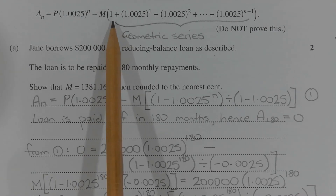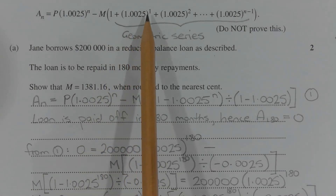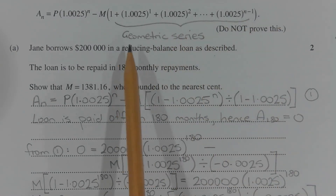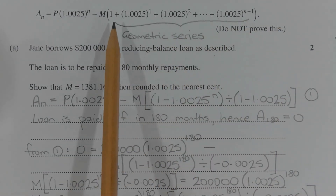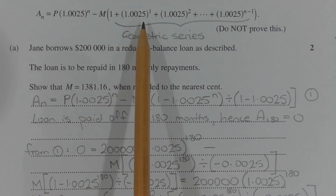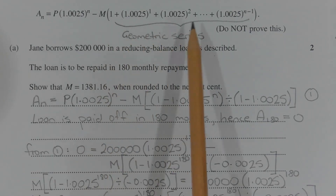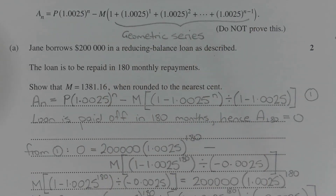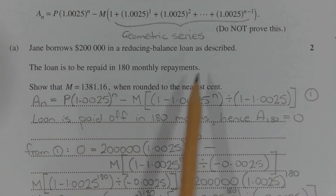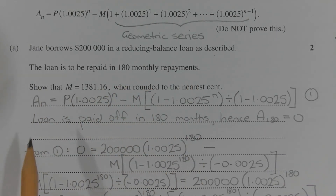The sum of the terms 1 plus 1.0025 to the power of 1 plus 1.0025 to the power of 2 and so on forms a geometric series, with the first term A equals 1, the common ratio R equal to 1.0025, and there are 180 terms. So N is equal to 180 because the loan is repaid in 180 monthly repayments. We can rewrite A_N using the sum of a geometric series formula: 1 minus R to the power of N over 1 minus R.